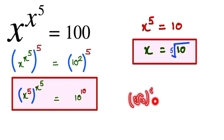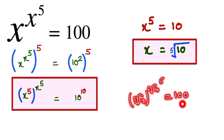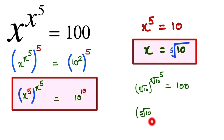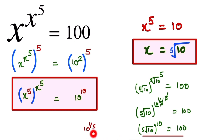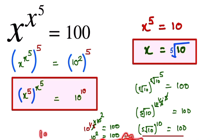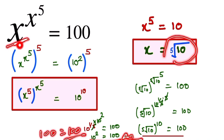We substitute x equals the fifth root of 10. So we get the fifth root of 10 to the power of the fifth root of 10 to the power 5. The exponent simplifies: 10 to the 1/5 times 5, the 5's cancel, giving the fifth root of 10 to the power 10. That equals 10 squared, which equals 100. So 100 equals 100, and we have proved that the final answer x equals the fifth root of 10 is correct.